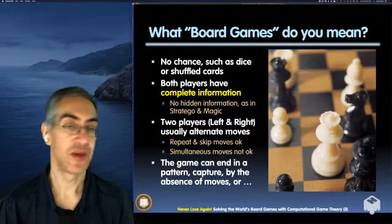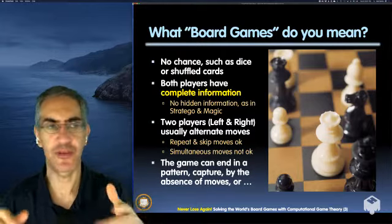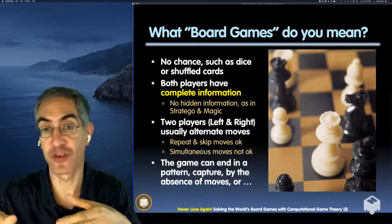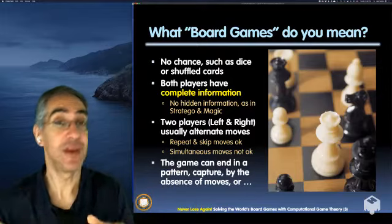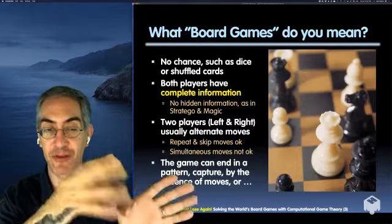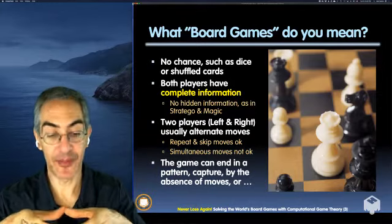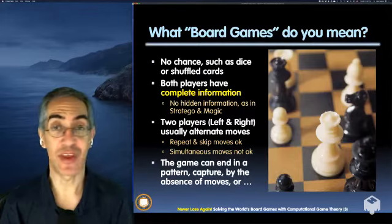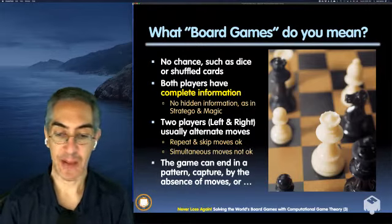Players are called left/right or red/blue. They usually alternate moves, though in games like Othello a player can skip a turn, giving the other a repeat move. In Dots and Boxes, making a box lets you move again. Simultaneous moves are not allowed — that's only handled by economic theory. The game can end any way: a pattern, a capture, or absence of moves.